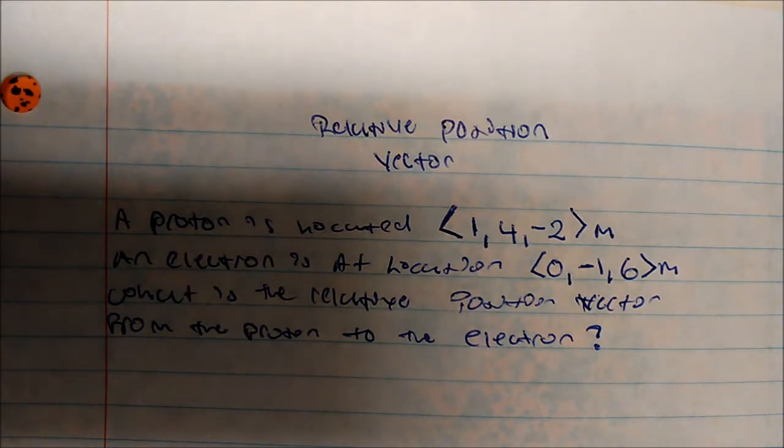It says a proton is located at 1, 4, negative 2 meters. An electron is at location 0, negative 1, 6 meters. What is the relative position vector from the proton to the electron?